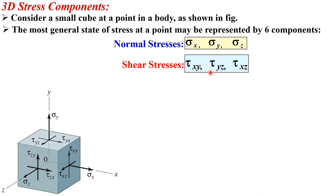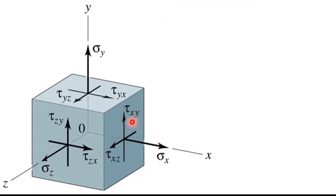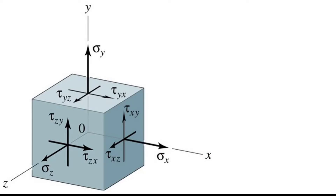Now look at the shear stresses. If we take any one shear stress, let us say tau xy, look at the significance of the subscripts x and y. Here x represents the face and y represents the direction. In this figure, tau xy means x represents the face — that means it is always in the x plane, which is perpendicular to the x direction. And the second subscript y represents the direction, so this shear stress tau xy acts in the y direction.